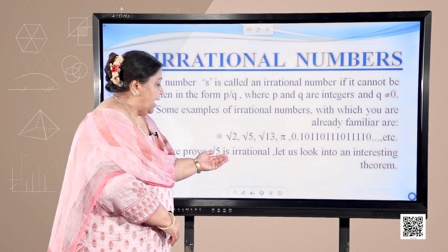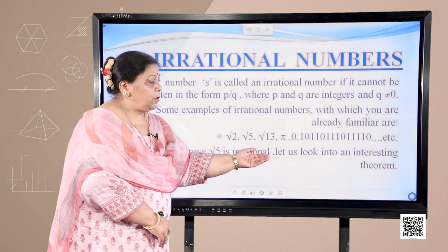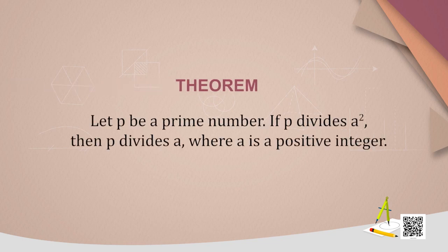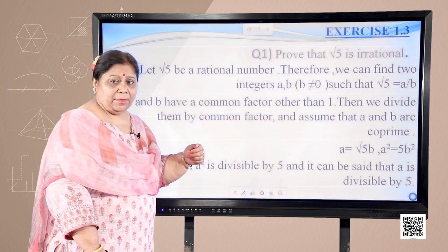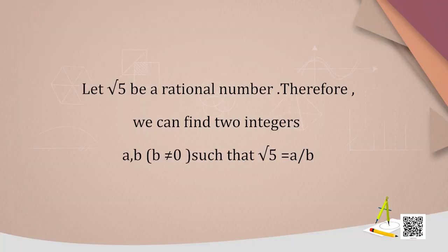Before we prove √5 is an irrational number, let us look into an interesting theorem which states: let p be a prime number. If p divides a², then p divides a, where a is a positive integer. We shall make use of this theorem in proving that √5 is irrational.